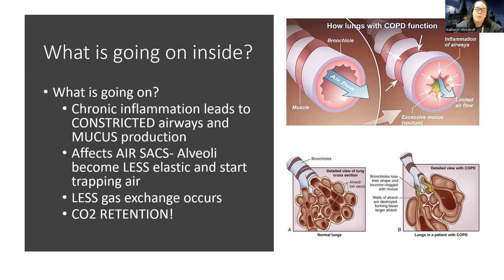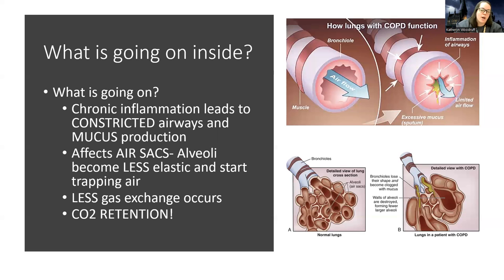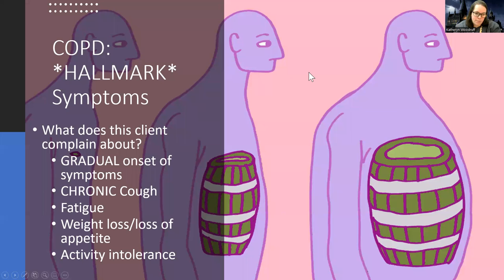The air sacs are where gas exchange occurs — where oxygen comes in and carbon dioxide goes out. When the alveoli get damaged in COPD, this leads to many problems. Unlike asthma where there's mostly airway resistance, COPD patients develop CO2 retention. They can't get oxygen into the alveoli well, and even worse, they cannot get that CO2 out because the alveoli are broken down and degraded.